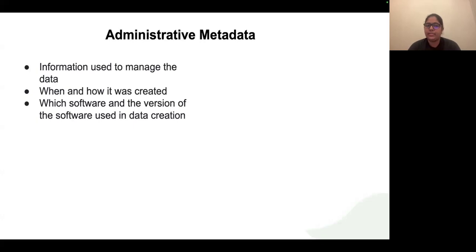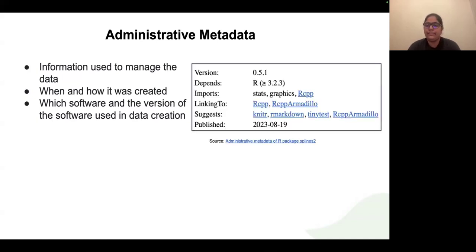The third type is administrative metadata, which uses information to manage the data — for example, when and how it was created. If software was used to create the data, what version of the software was used? For example, the image shows the R package splines2. In this metadata we can see the version of the software, what packages it depends on and imports, and when it was published. These kinds of data are called administrative metadata.